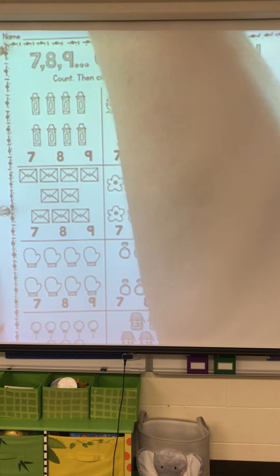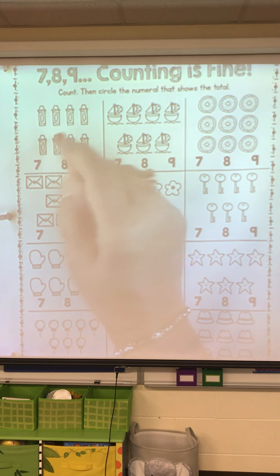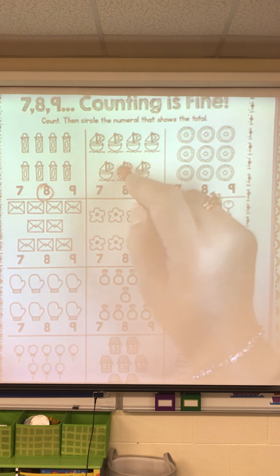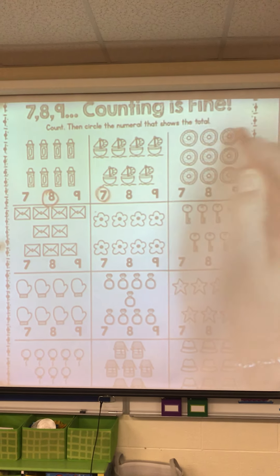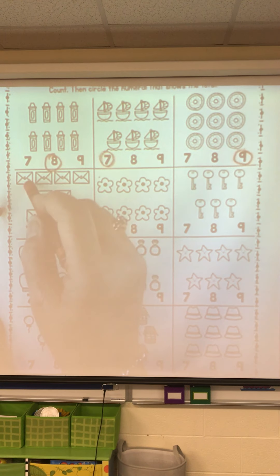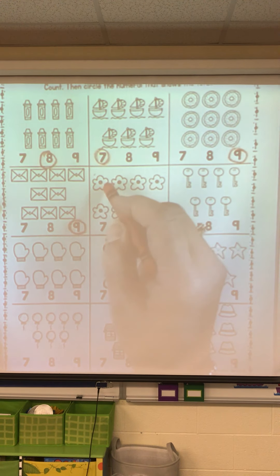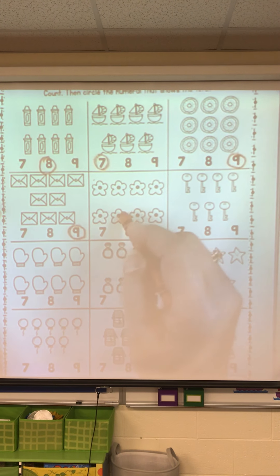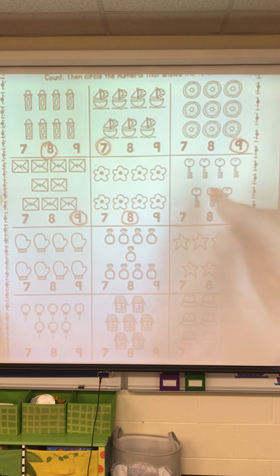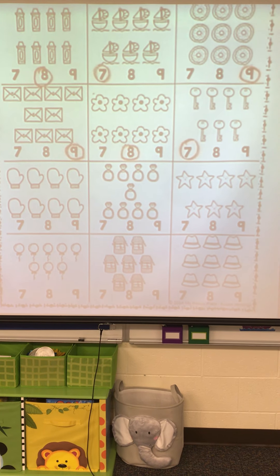1, 2, 3, 4, 5, 6, 7, 8. Circle the eight. Count: 1, 2, 3, 4, 5, 6, 7, 8, 9. Circle the nine. Count: 1, 2, 3, 4, 5, 6, 7, 8, 9. Circle the nine. Count: 1, 2, 3, 4, 5, 6, 7, 8. Circle the eight. Count: 1, 2, 3, 4, 5, 6, 7. Circle the seven. You finish it. Count each group and circle the right number. That's it for math.